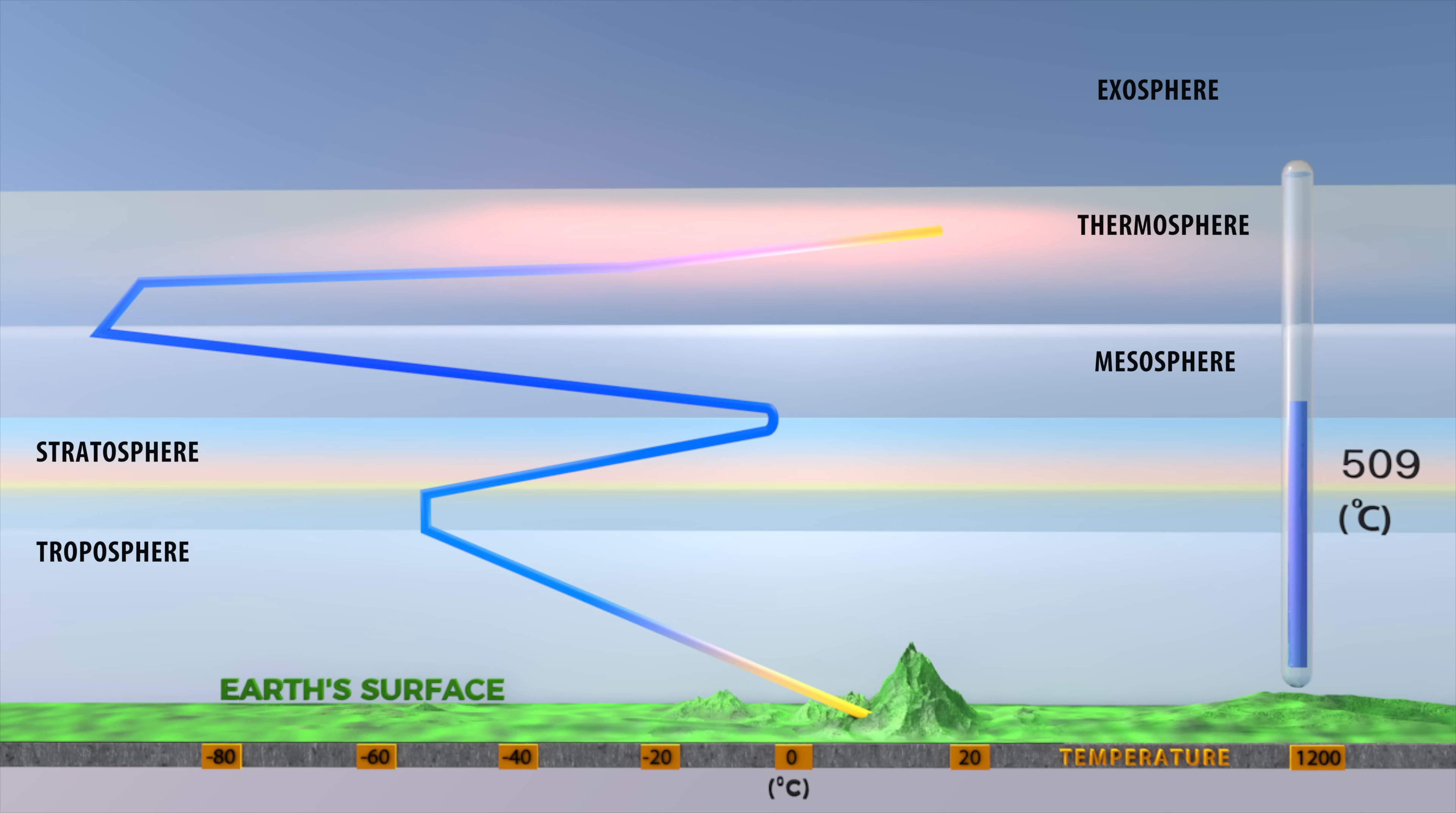After that, the temperature rises from negative 92 degrees Celsius to 1200 degrees Celsius near the upper boundary of the thermosphere.